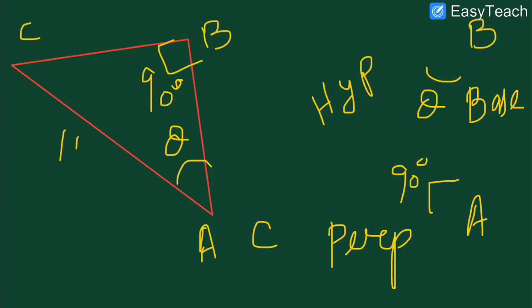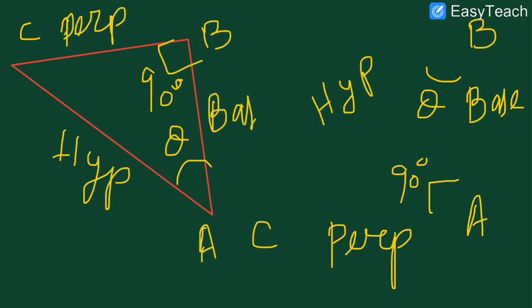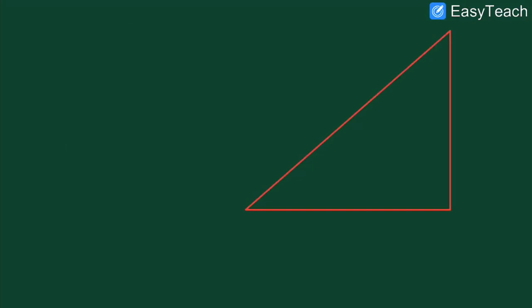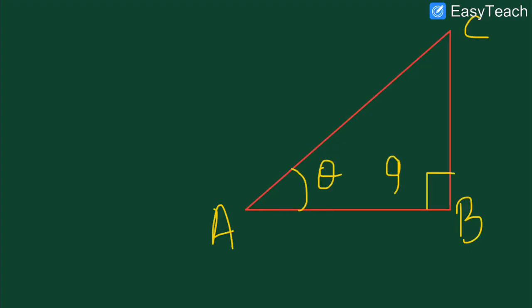So this is the hypotenuse — the side which is opposite to the 90 degree angle is called hypotenuse. BC is perpendicular and AB is base. This way we have learned which side is the base, which is perpendicular, and which is hypotenuse. So here we have a triangle right-angled at B, with angle A equal to theta. So BC is perpendicular, AC is hypotenuse, and AB is base.